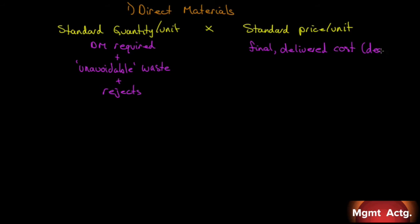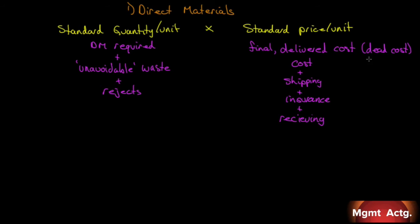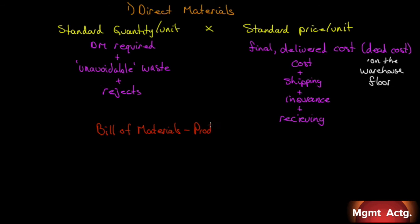For the standard price, we look at the final delivered cost — for those in the industry, you'll recognize the term 'dead cost.' Your dead cost is the cost of the raw material plus shipping, plus any insurance, plus receiving costs. In other words, it's your cost on the warehouse floor. Once it hits the warehouse floor, any further handling is part of overhead. But to get it there — that's everything, your all-in dead cost of your raw material.